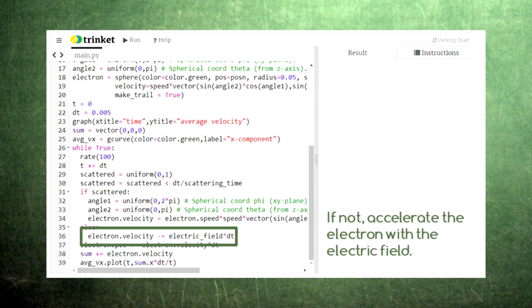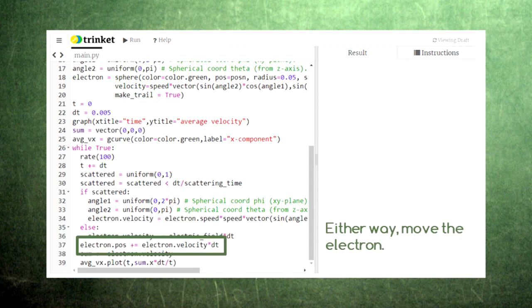However, if the electron does not experience a collision, then it accelerates under the influence of the electric field. Either way, the electron will move forward one step according to its velocity.